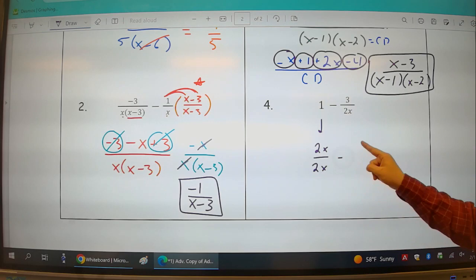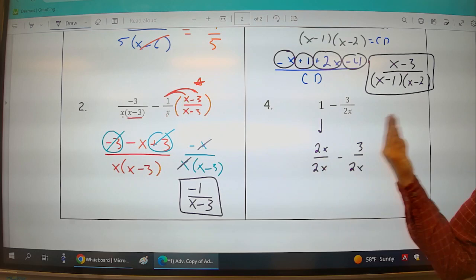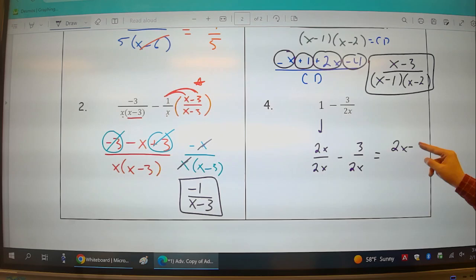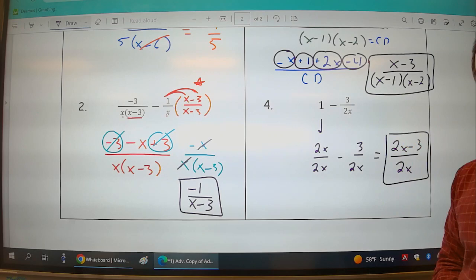Minus 3 over 2x. Common denominators mean I can just add or subtract their numerators. This is 2x minus 3 over 2x. And that is my answer. Very important: you can't cancel this 2x and this 2x because we're not multiplying. It's not 2x times negative 3, it is 2x minus 3.